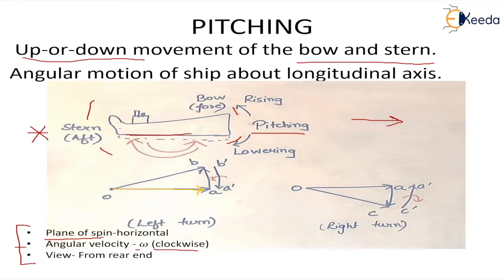We have taken two cases: one when the ship is taking a left turn and another when taking a right turn. In the first case when the ship is taking a left turn, the new position of angular velocity becomes OB, in which the magnitude remains the same — only the axis of spin changes — bringing into account the angular velocity of precession. Now AB gives us the active gyroscopic couple. Whenever we try to change angular velocity, we apply a torque which exists in the form of a couple. So for an active gyroscopic couple, there also exists a reactive gyroscopic couple, denoted by B'A', and it will bring about the pitching movement in the ship.